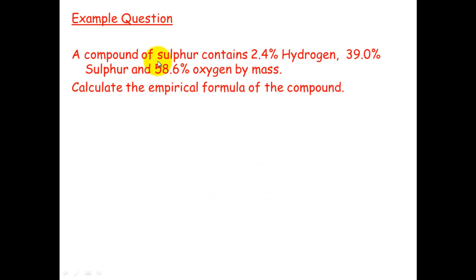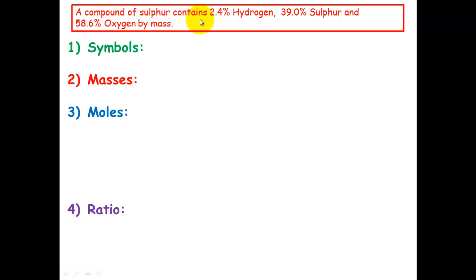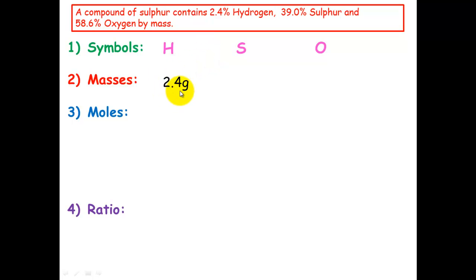Here's an example: a compound contains 2.4% hydrogen, 39% sulfur, and 59% oxygen by mass — calculate the empirical formula. Step 1: write down the symbols — hydrogen, sulfur, oxygen. Step 2: write down the masses. Since they're percentages, convert to grams: hydrogen = 2.4 g, sulfur = 39.0 g, oxygen = 58.6 g (assuming 100 g sample, which is fine since it's ratio-based).